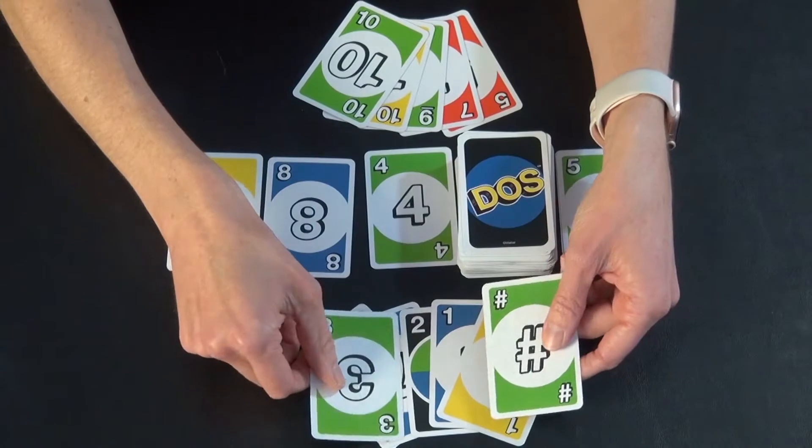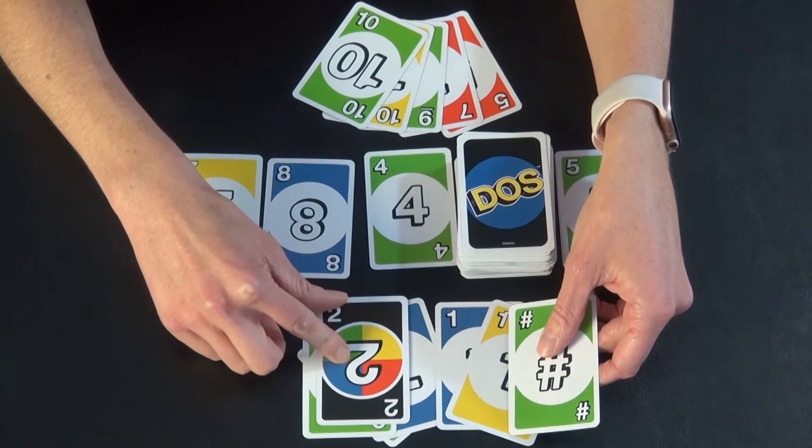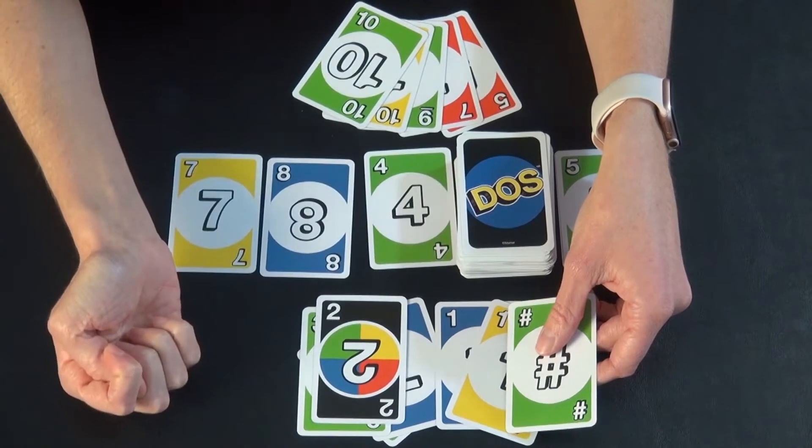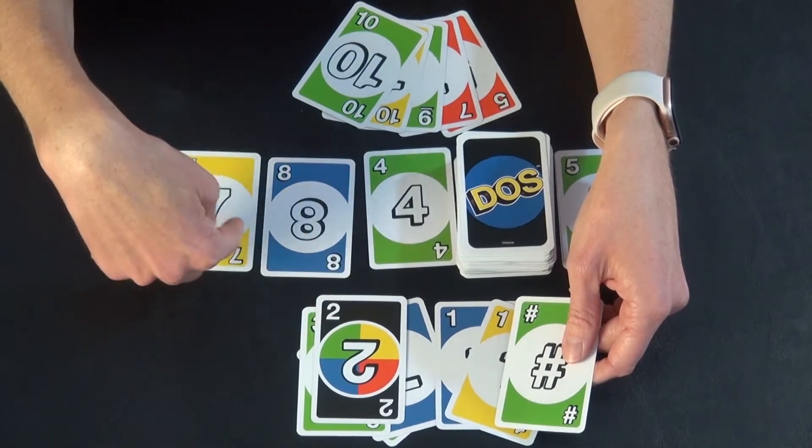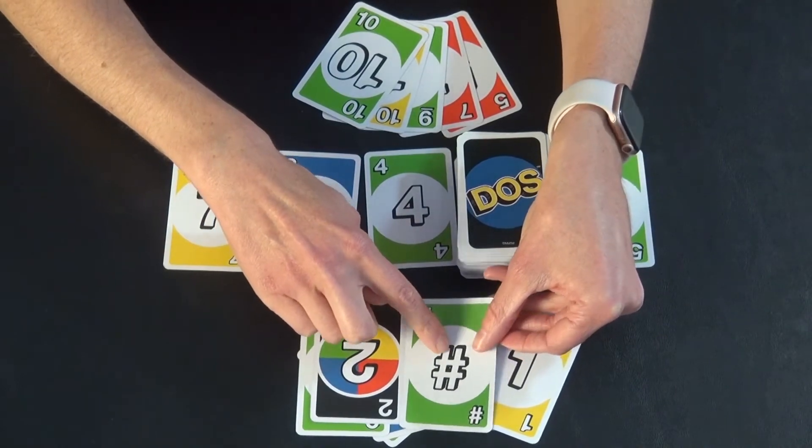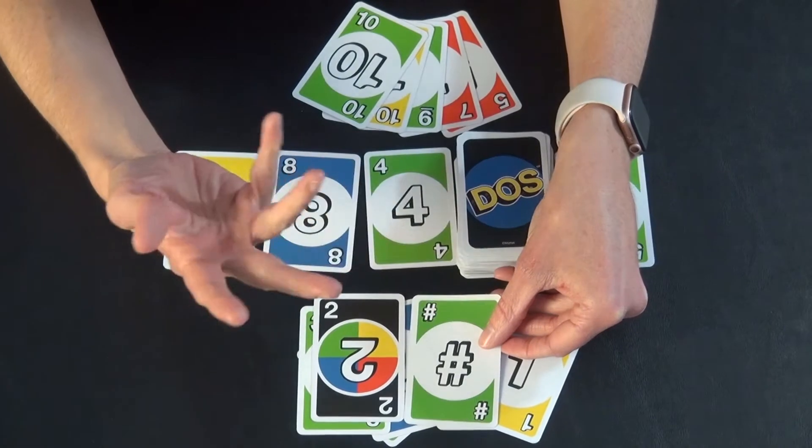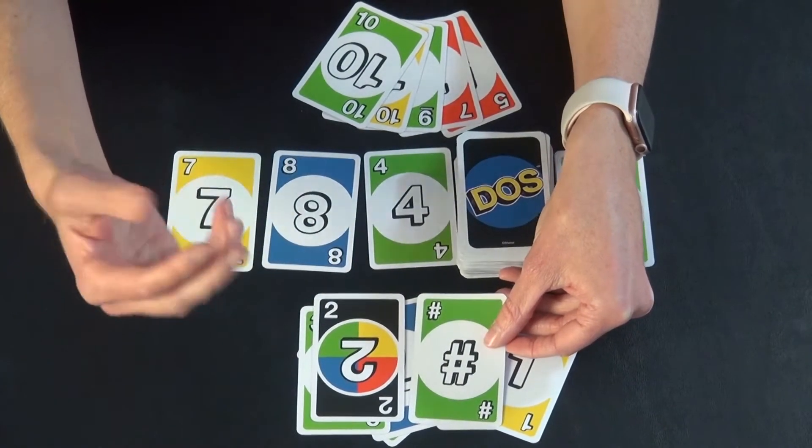There are two specialty cards in this game. The twos are wild. They are any color, which can be very helpful for getting that color bonus. And the number cards, there are number cards for each color in the deck, and those are any number that you need, which is also very handy.